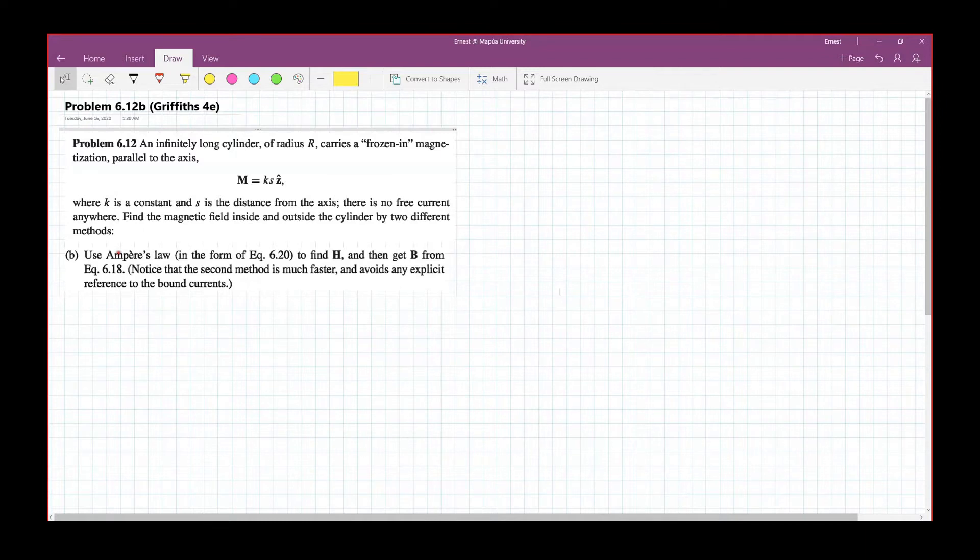Similar to our previous example, the cylinder will be considered as a series of solenoids, wherein their bound currents are along the phi direction, curling around the cylinder, within the cylinder and on the surface of the cylinder. That's the first part of the problem.